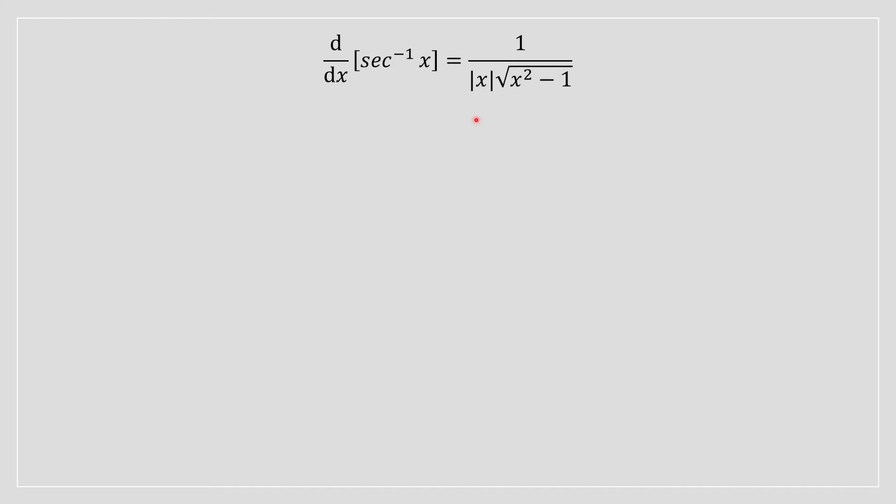Hey lads, it's Danny here today bringing you a video on why the derivative of arc secant of x is equal to one divided by absolute value of x multiplied by square root of x squared minus one. Before we jump into this proof, please drop a like and subscribe and let's get right into it.